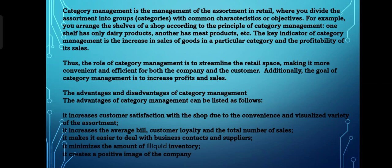Category management is the management of the assortment in retail where you divide the assortment into groups or categories with common characteristics or objectives. For example, you arrange the shelves of a shop according to the principle of category management — one shelf has only dairy products, another has meat products, and so on.